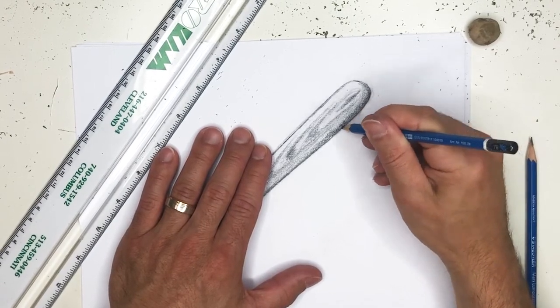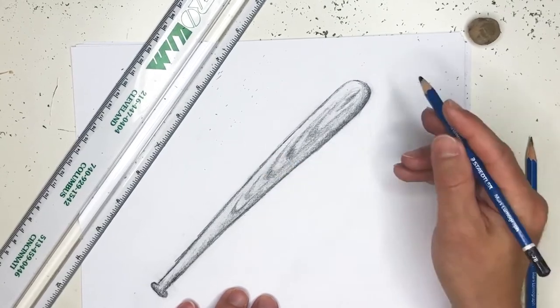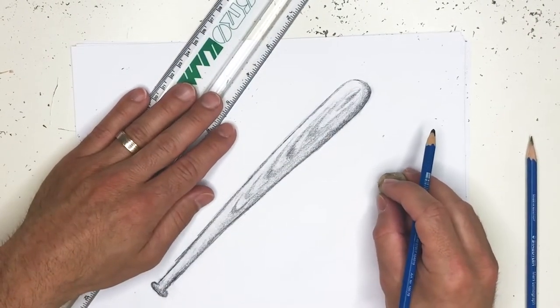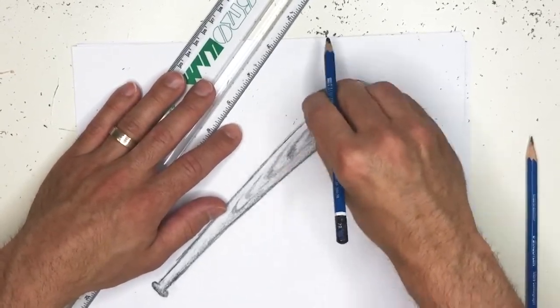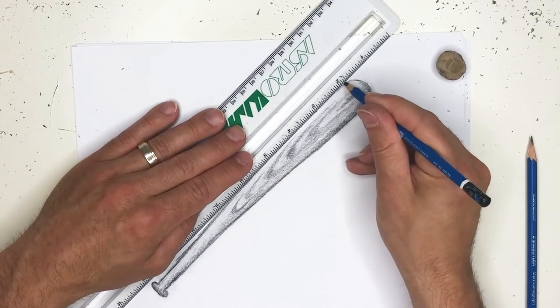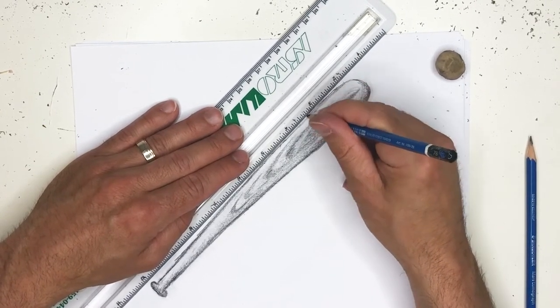As you finish up your drawing, what you want to do is just make sure that things look okay. Make sure that your bat is to your liking. In terms of what I see, I feel like this is just a little bit too thin. I know that over here I said it was too thick, and over here I think it's too thin, so I actually want to bring this back out just a little bit over here.